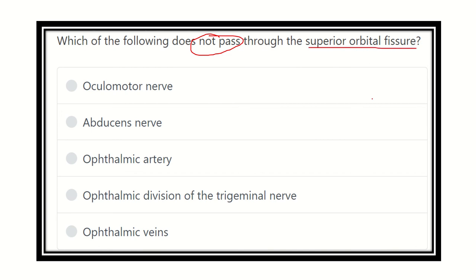First of all, we have to know about this superior orbital fissure. We know that this superior orbital fissure is located between the greater wing of the sphenoid and the lesser wing of the sphenoid bone. After knowing the position of the superior orbital fissure, we have to know the structures which are passing through it.